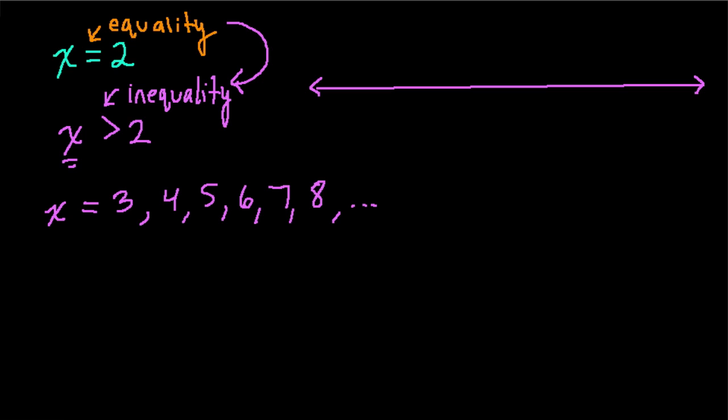If we wanted to say x could equal 2 or it could be bigger than 2, we'd write this. So x could be bigger than or equal to 2, and then that would include 2 for x and 3 and so forth.